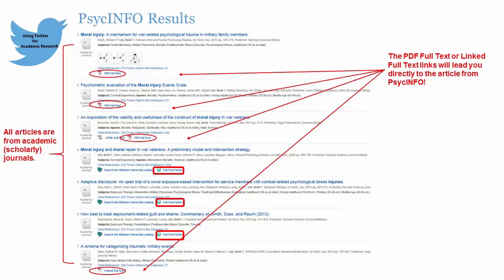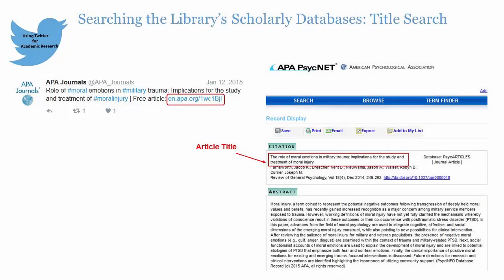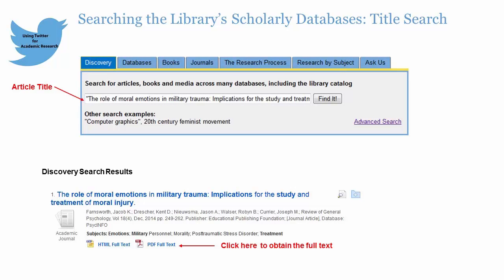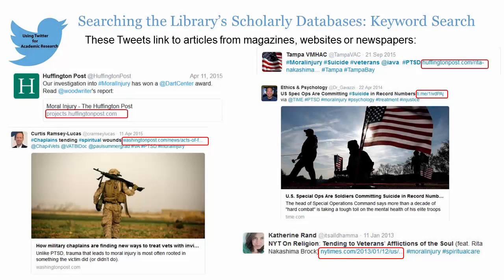Click on Full Text Finder to see if you can obtain the full text for these articles from another database. The academic journal icon displayed for all of these articles provides further proof that these are all indeed scholarly articles. If you click on the link of this tweet from APA Journals, it takes you to an abstract for a journal article on the APA PsychNet website. You cannot obtain the full text from this site. Search the library's discovery system by entering the full article title in quotation marks into the search box. This is located on the library's homepage. The discovery system enables you to search all of the library's databases and the catalog at the same time. When you search for this article title, the first result is the article that you need. Click on the PDF full text icon to obtain the article. The search of Twitter for hashtag Moral Injury returned many results from popular magazines, newspapers, and websites.